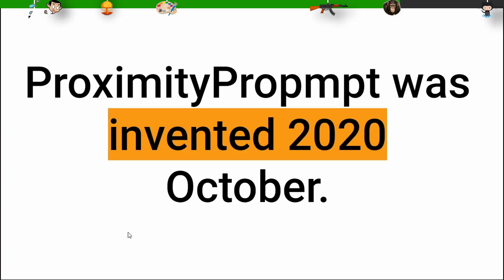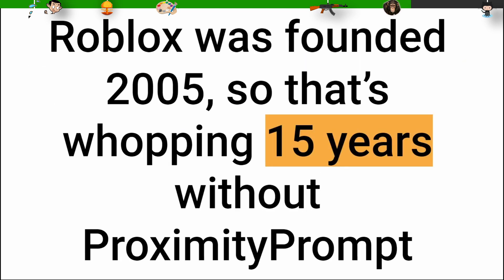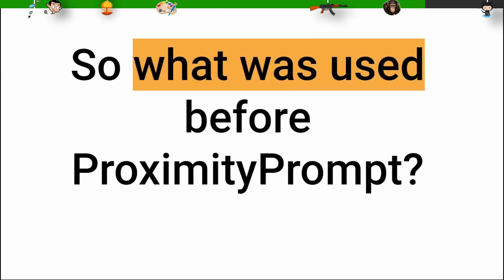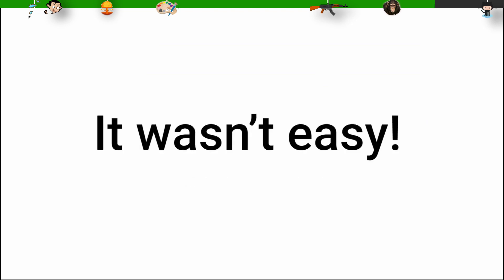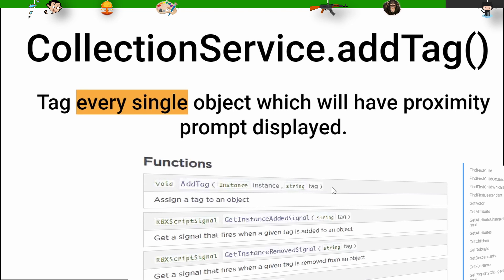Proximity prompt was invented in October 2020 — that is only two years ago. Roblox was founded in 2005, so that's a whopping 15 years without proximity prompt. So what was used before proximity prompt? It wasn't easy — it took a number of steps. Basically you need to tag every single object which will have a proximity prompt displayed.